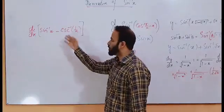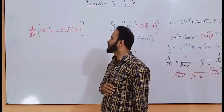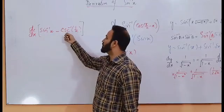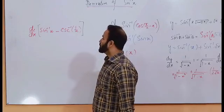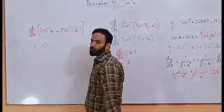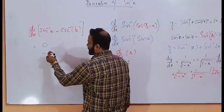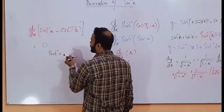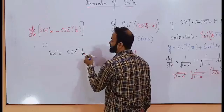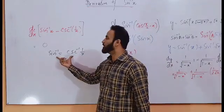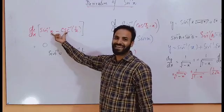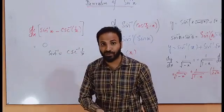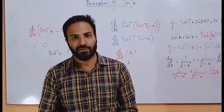An important question which has appeared in many entrance exams like PPSC and CSS in different countries: what is the derivative of sine inverse x minus cosecant inverse of 1 over x? The derivative of this term is simply 0. Because in inverse trigonometric functions, sine inverse x is equal to cosecant inverse of 1 over x. So when both terms are equal, they cancel each other and the remaining term is 0. The derivative of 0 is always 0. Hope you like this video. Please like, subscribe and comment on my videos. Thank you very much.